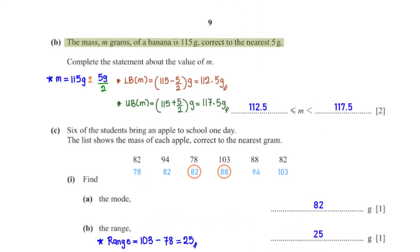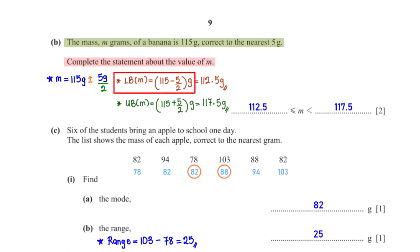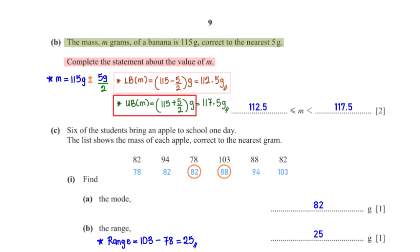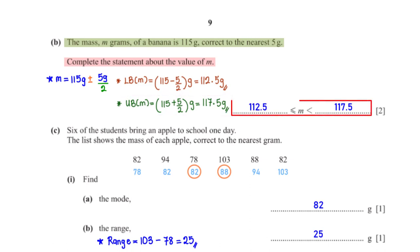The mass m grams of a banana is 115 grams, correct to the nearest 5 grams. Complete the statement about the value of m. We apply plus and minus half of 5 grams. The lower bound is 115 minus 2.5 equals 112.5 grams, and the upper bound is 115 plus 2.5 equals 117.5 grams. So 112.5 ≤ m < 117.5.